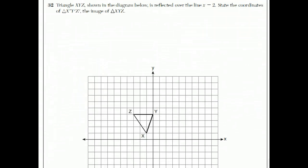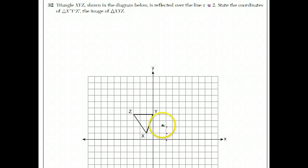Question 32. We have triangle XYZ and it's reflected over the line X equals 2. X equals 2 is a vertical line — this is the point (2,0) and (2,1) and (2,2). X equals 2 is the line where all X coordinates are equal to 2.